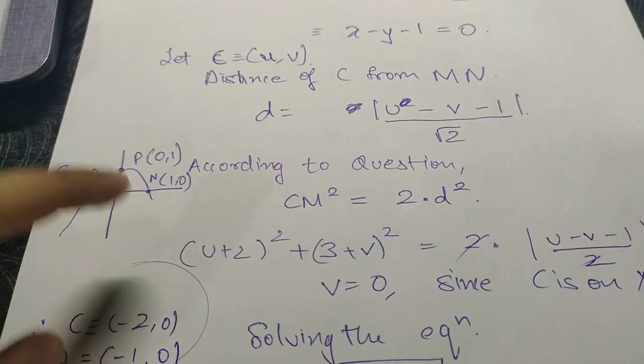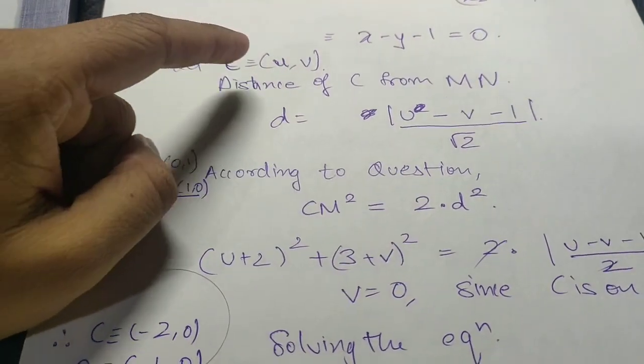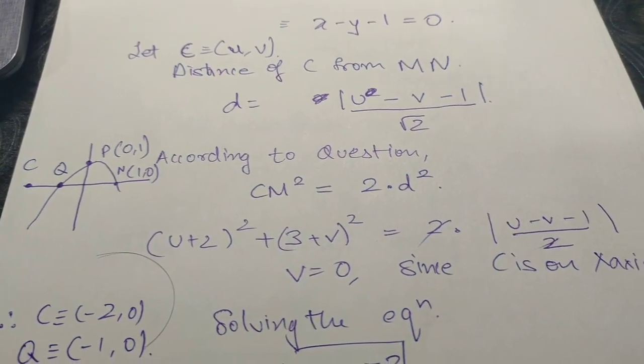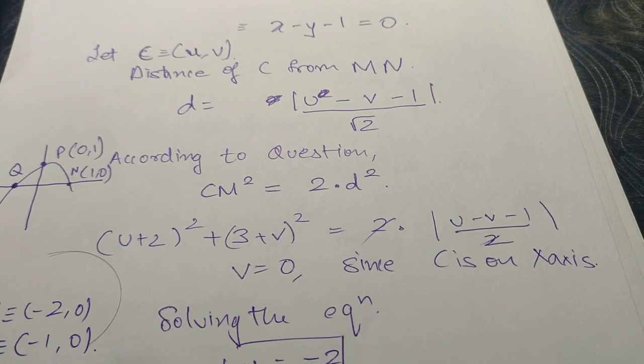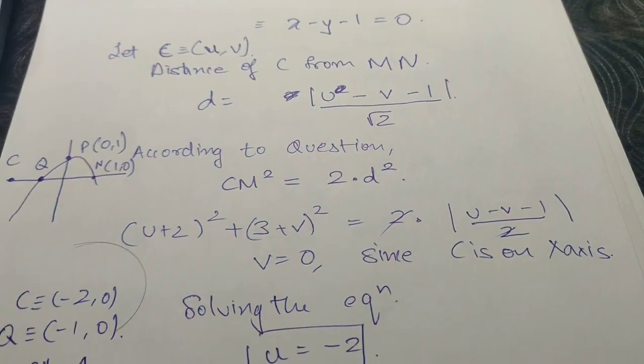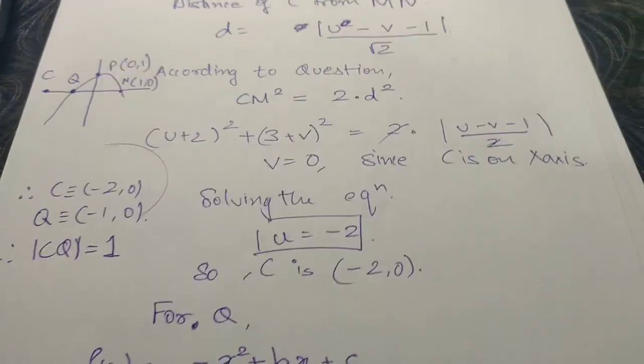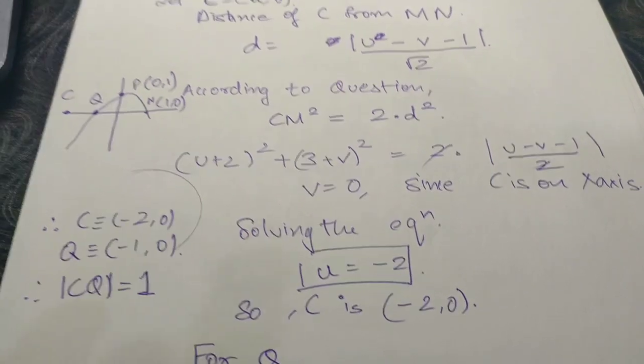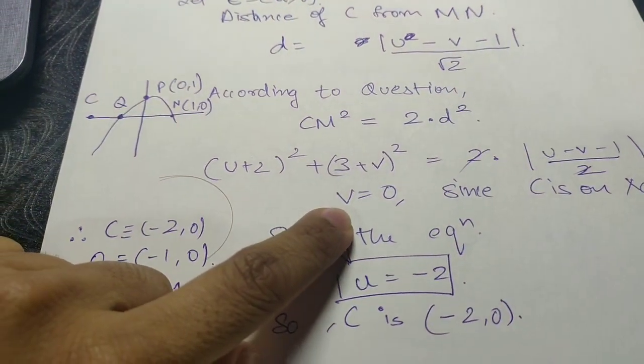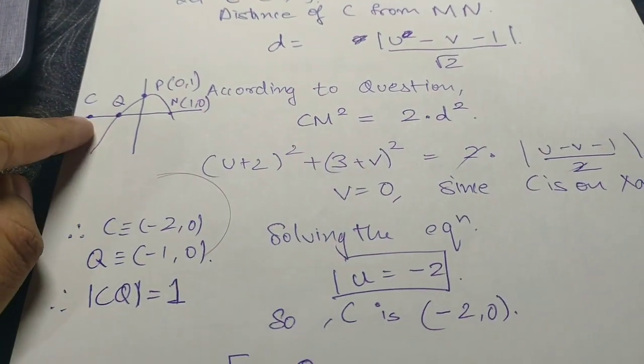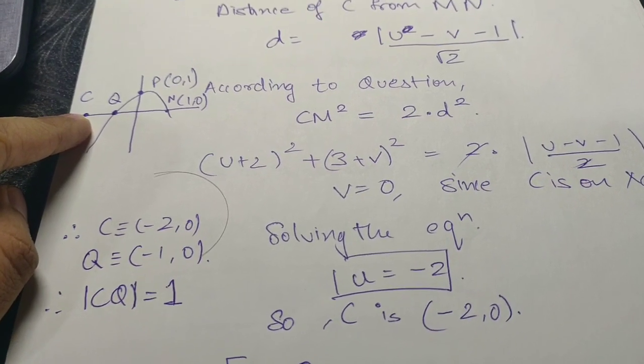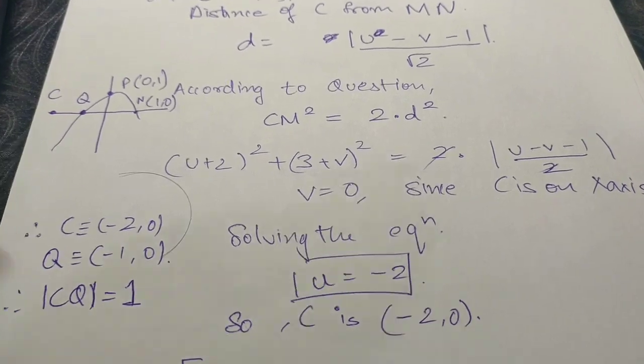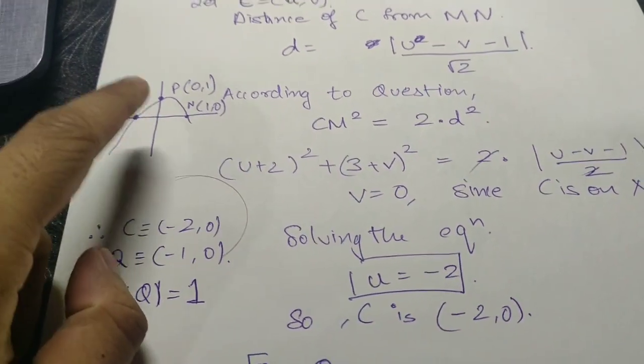So CM² is basically using the distance formula: (u+2)² + (3+v)² = 2 times d². Solving this we get u equals to minus 2. Now v is equal to zero because point C already lies on x-axis, so we know the y coordinate is equal to zero. So we get that point C is (-2, 0).